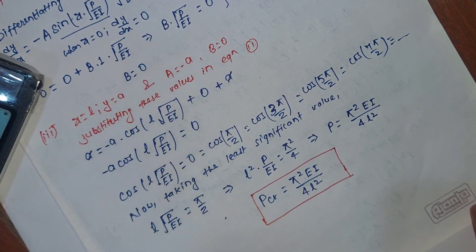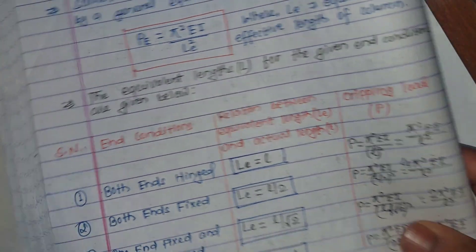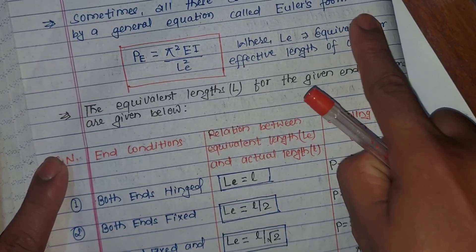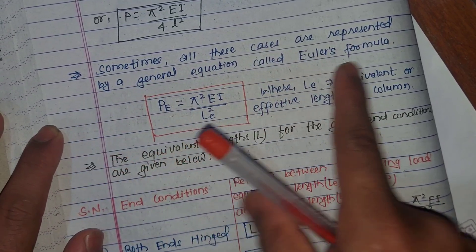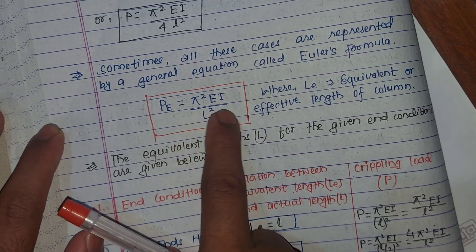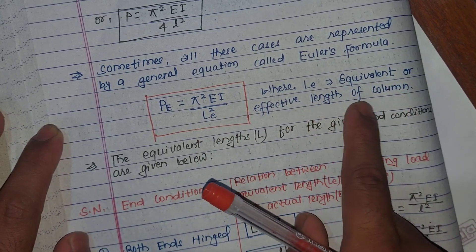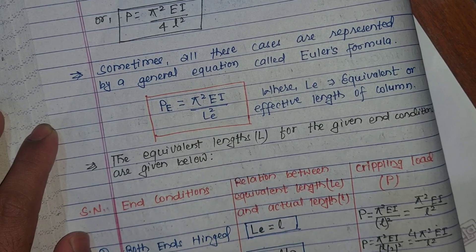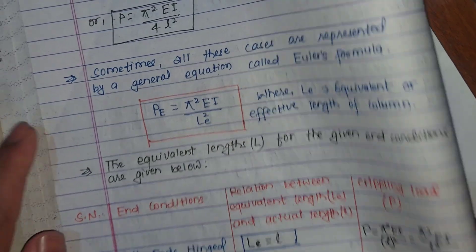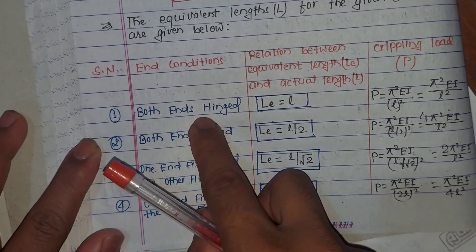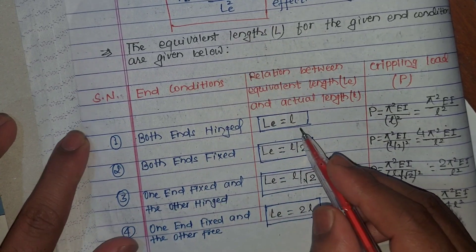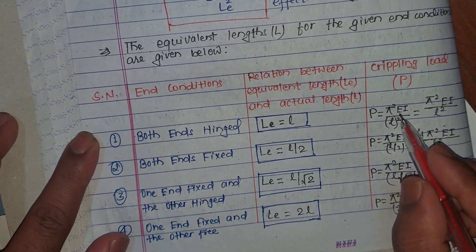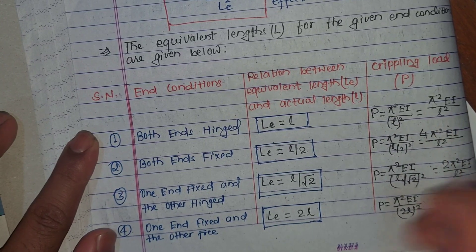So this is the value of critical load for the 4th case. Euler's formula gives a general equation for all these cases: Pe is equal to π²EI divided by Le², where Le is the equivalent or effective length of the column. This effective length changes for different end conditions.